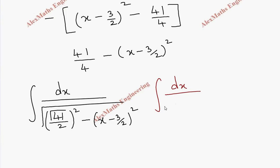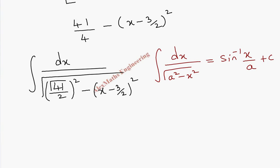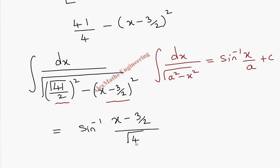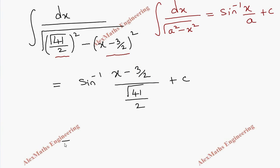The formula is: integral dx by root of a² − x² = sin⁻¹(x/a) + C. In place of a we have √41/2, and in place of x we have (x − 3/2). Substituting, we get sin⁻¹((x − 3/2) / (√41/2)) + C.